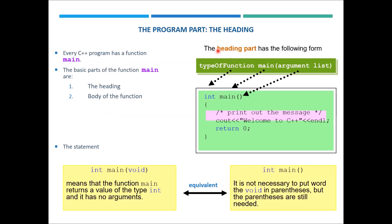Let's consider this example. Here 'int main' is the heading of our main function, and whatever is inside the curly brackets is called the body of the function. In the heading, there are three important things: first, 'main' — which is always present in every C++ program. It is not possible to create a C++ program without this main function.